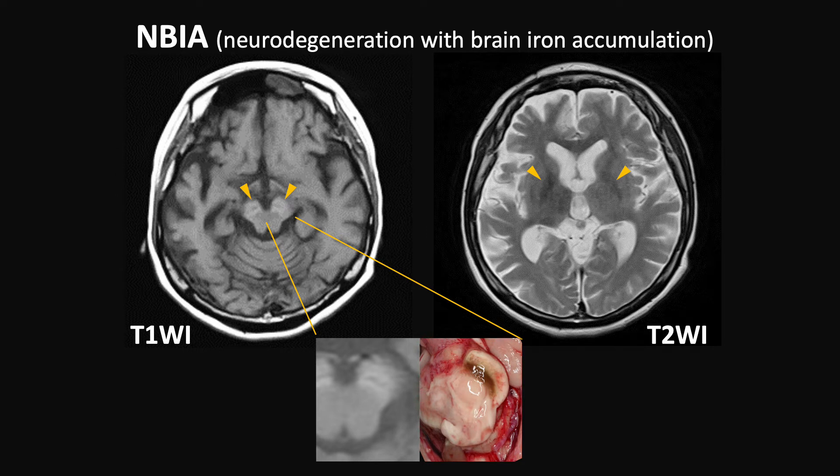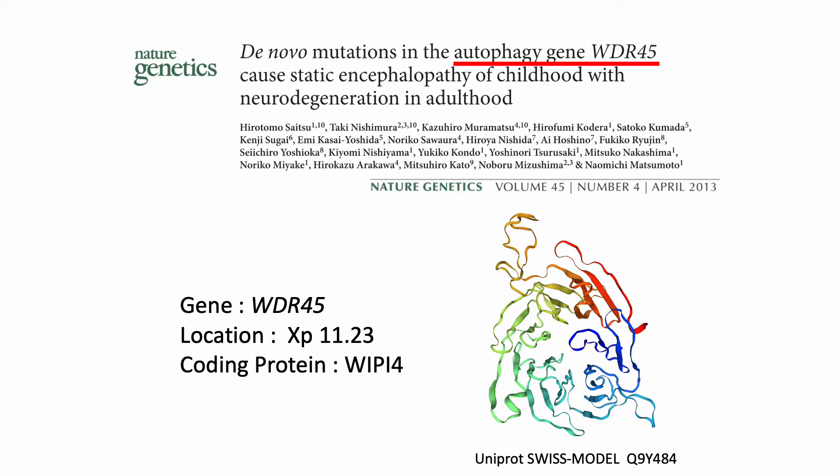BPAN is one of a group of neurodegeneration with brain iron accumulation. Brain MRI demonstrates iron accumulation in the globus pallidus and substantia nigra. The causative gene WDR45 is located on the X chromosome. BPAN is caused by mostly de novo loss of function mutations.